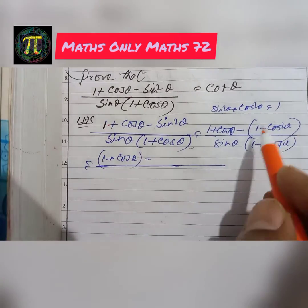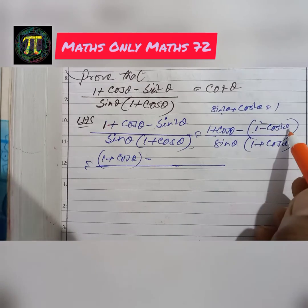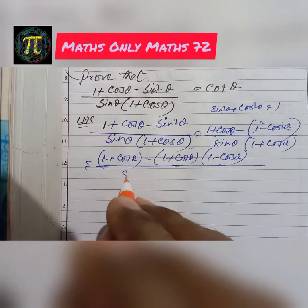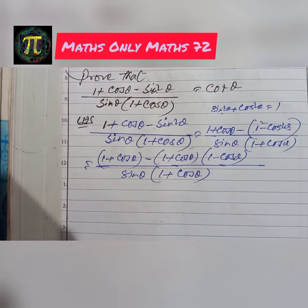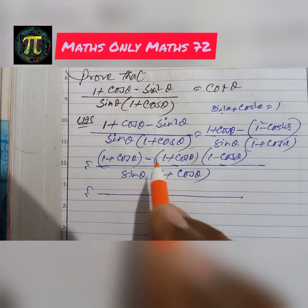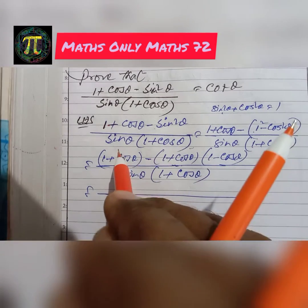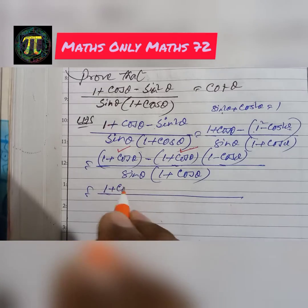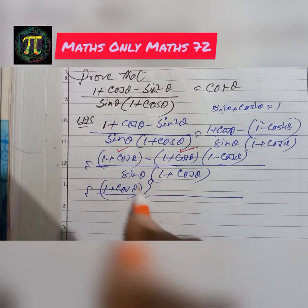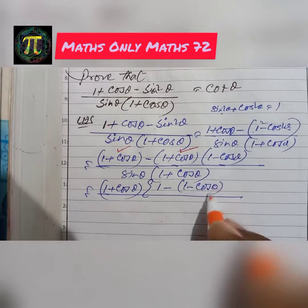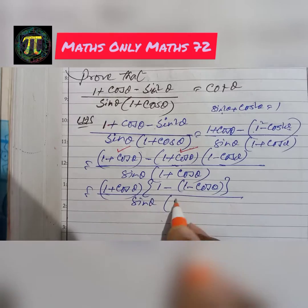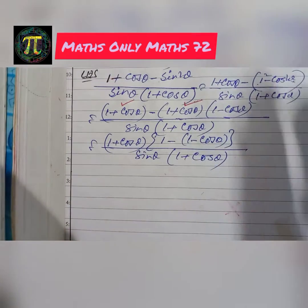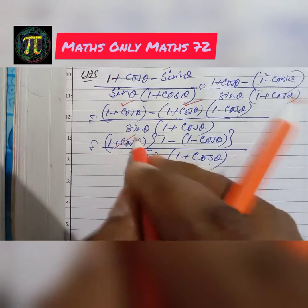This simplifies to (1 + cosθ − 1 + cos²θ) / (sinθ · (1 + cosθ)). Using the identity a² − b² = (a + b)(a − b), the numerator becomes (1 + cosθ)(1 − cosθ) ... wait, we factor: (1 + cosθ) is common, so (1 + cosθ) in numerator and denominator cancel.